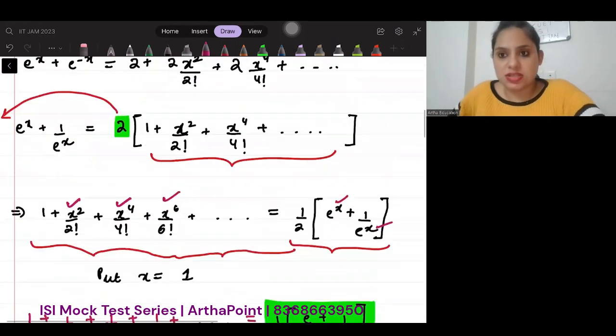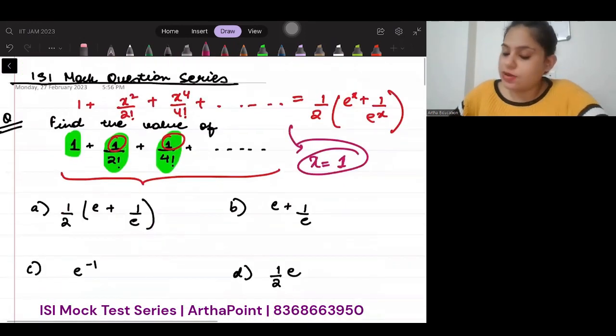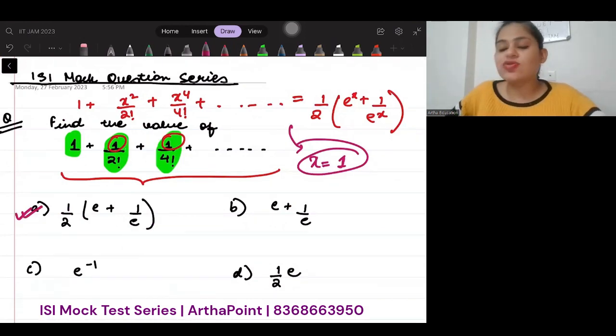So, the correct answer to this question will be half e plus 1 by e. I hope you have understood this question well. Now, I will meet you in the next session with another question which is important for ISI mock test series. Best of luck. Thank you.